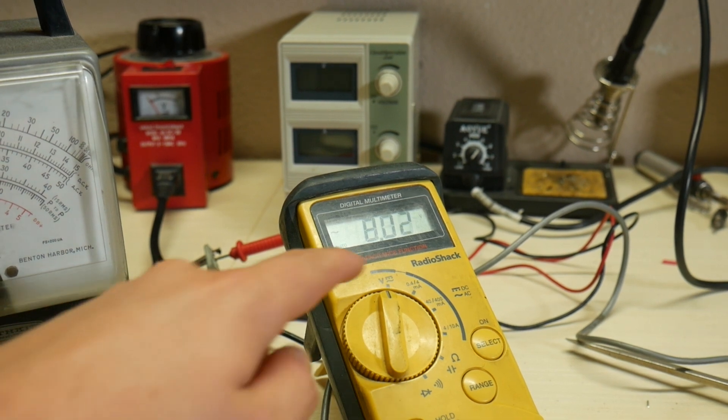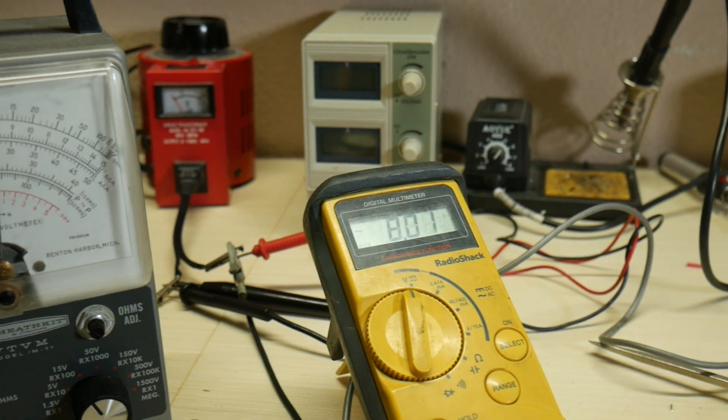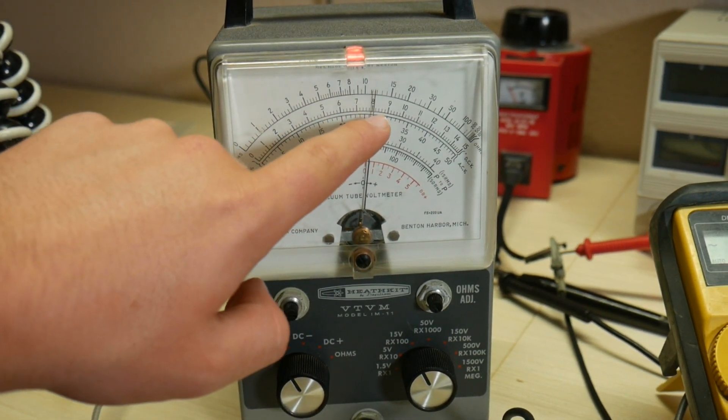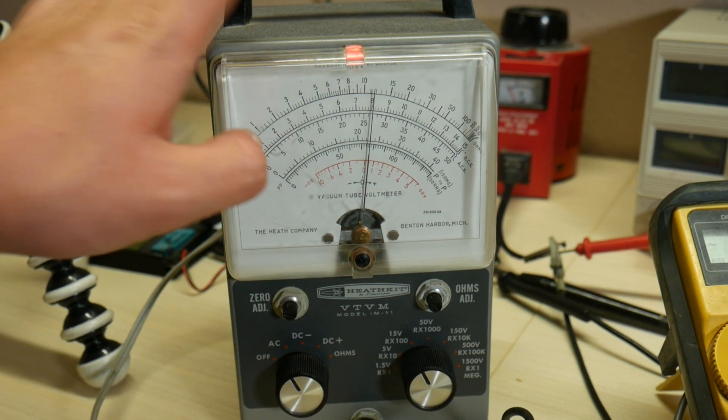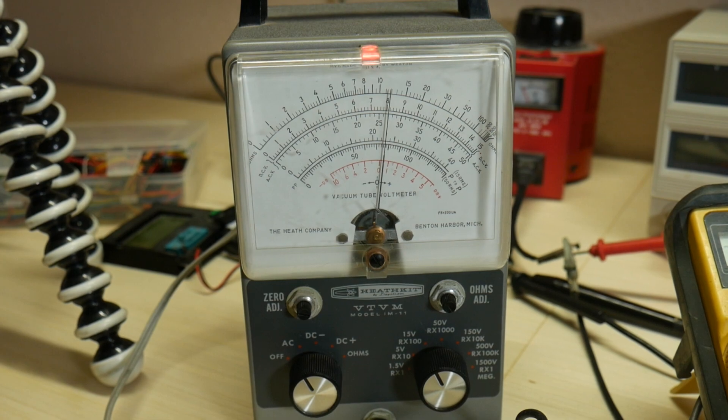Wow, this is precise. I have exactly 8 volts AC coming out of my Variac which that volt meter is reading. And here, this needle is exactly on 8. So this vacuum tube volt meter is now calibrated and working great.